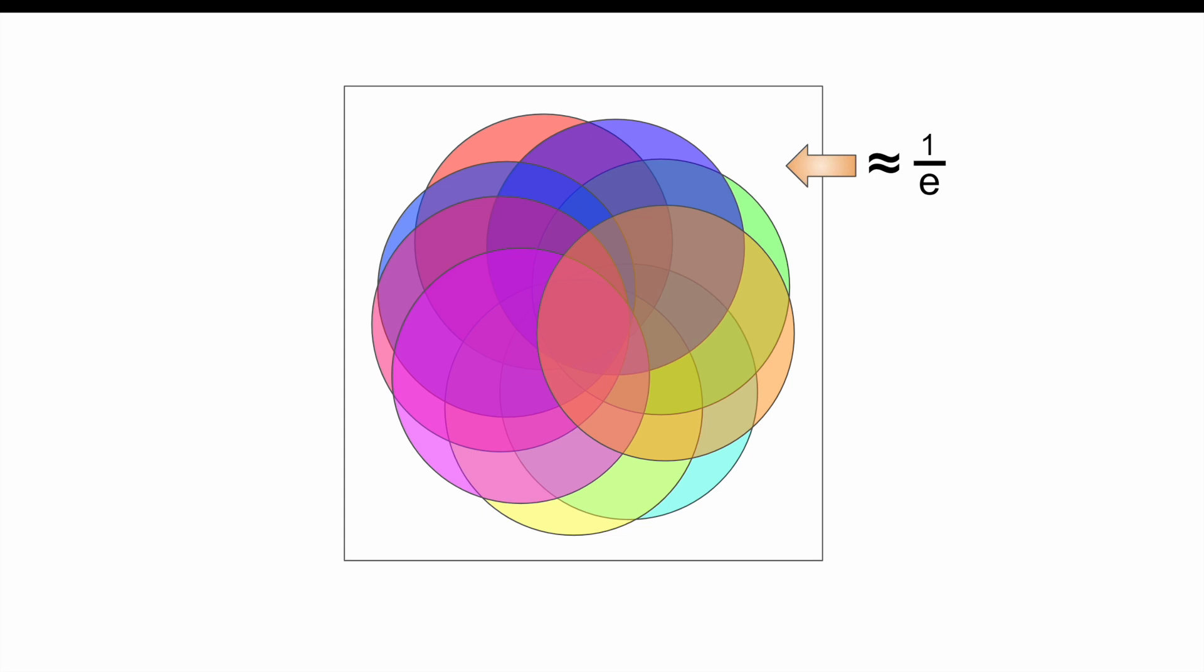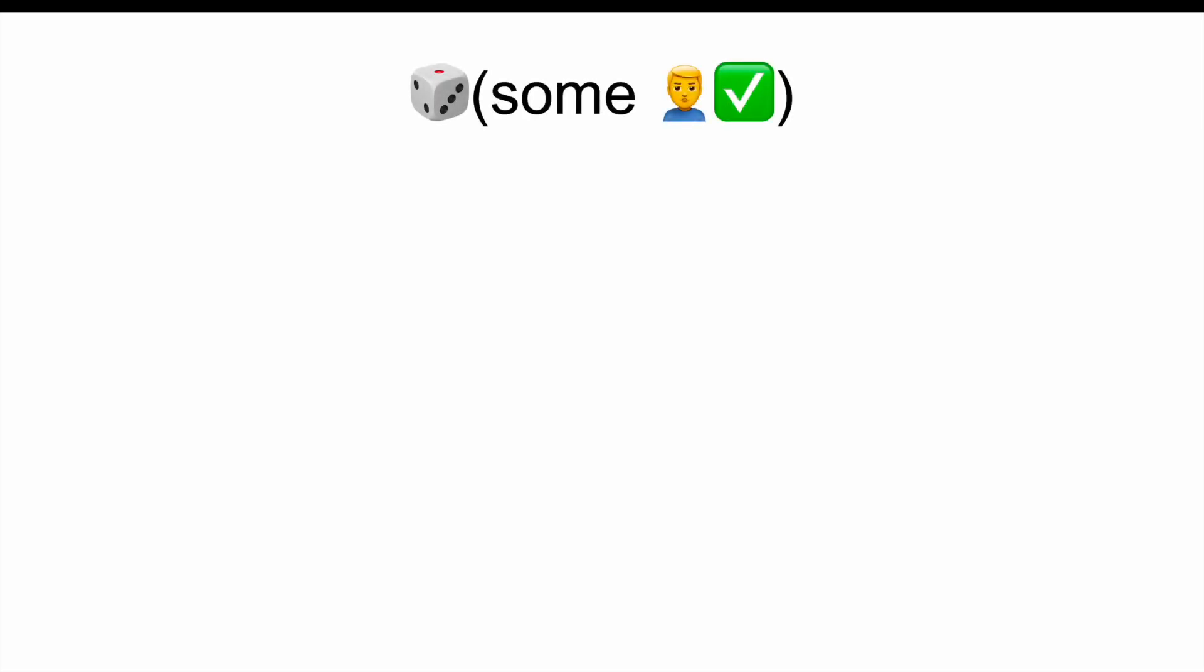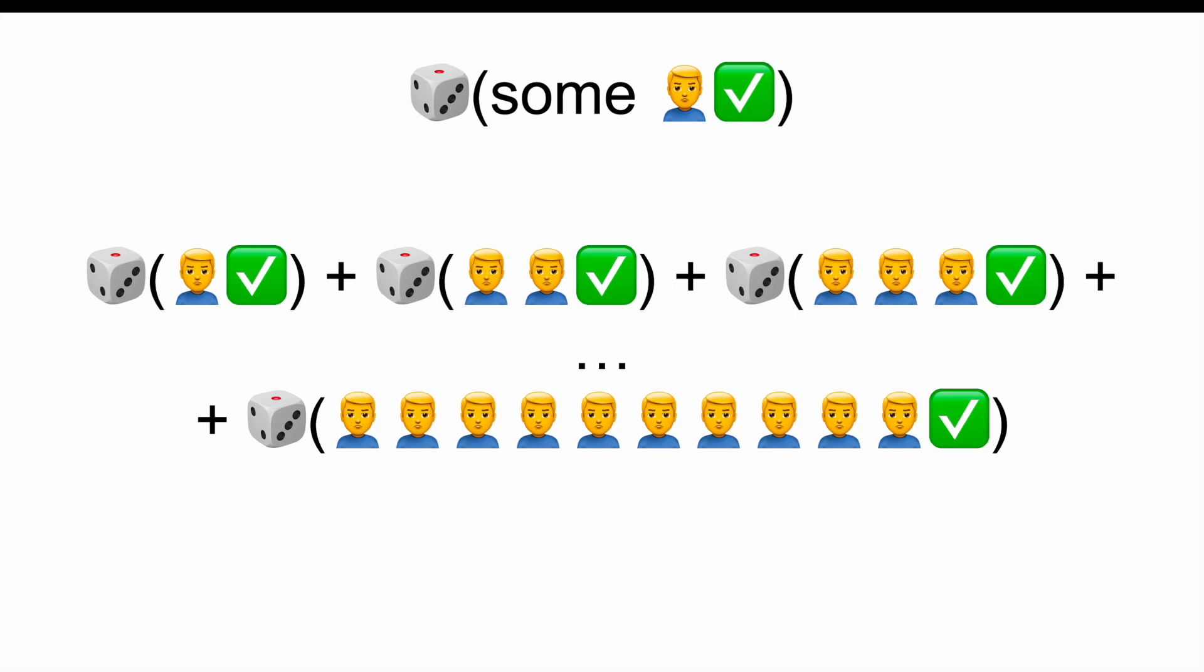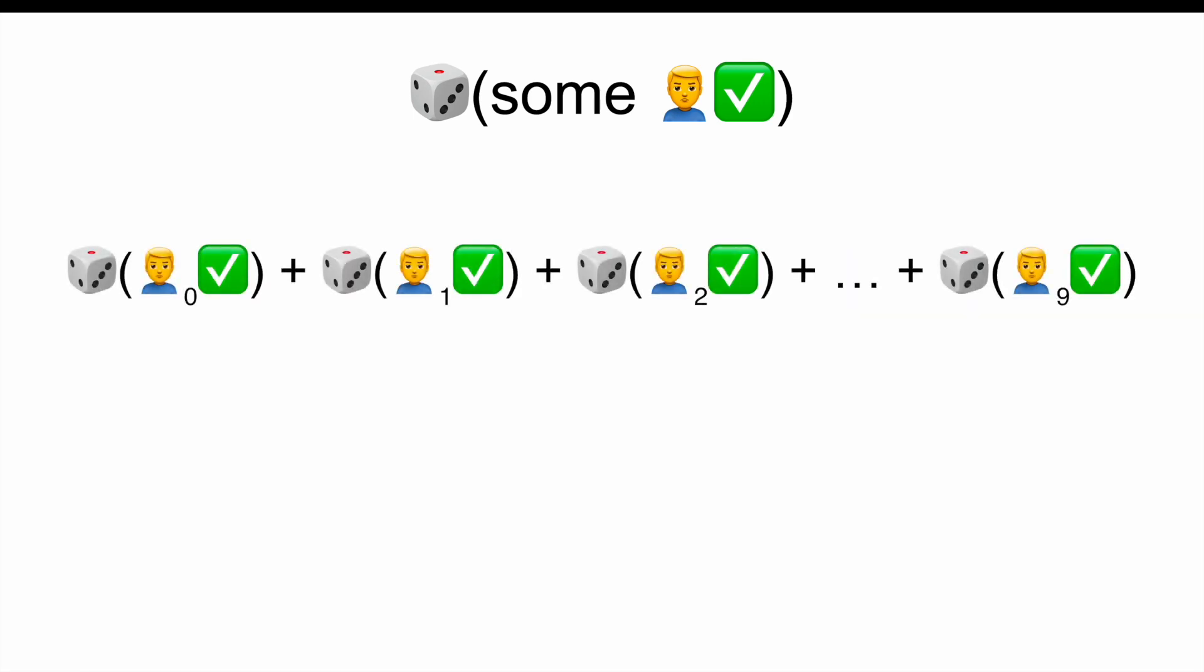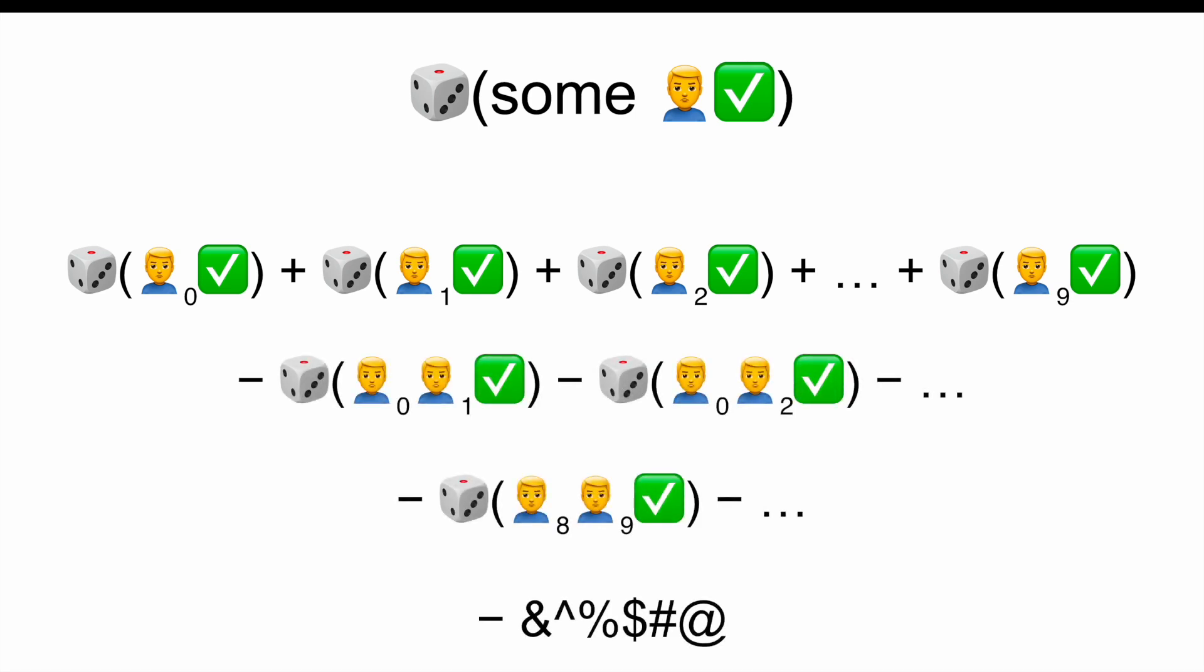So yes, we could have computed the probability directly, but it would have been complicated. There would be a few options. We could have either computed some mutually exclusive events, like exactly one prisoner being right, or exactly two, or exactly three, and so on, so there are no overlaps to worry about. Or we could have added the probabilities of each individual prisoner being correct, but then actually account for all the little overlaps, and the overlaps within the overlaps, and the overlaps within the overlaps within the overlaps, and so on, which is a huge mess.